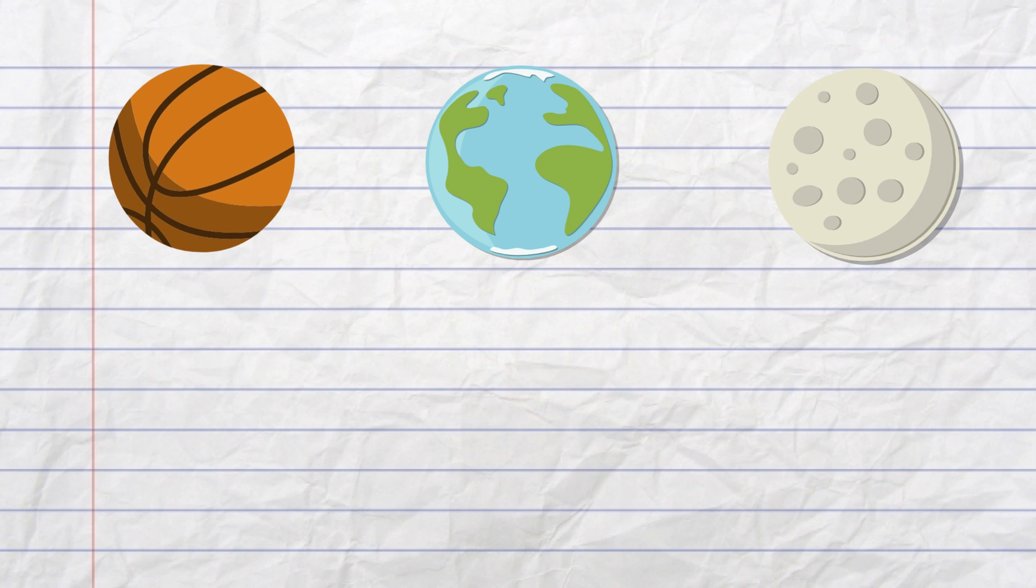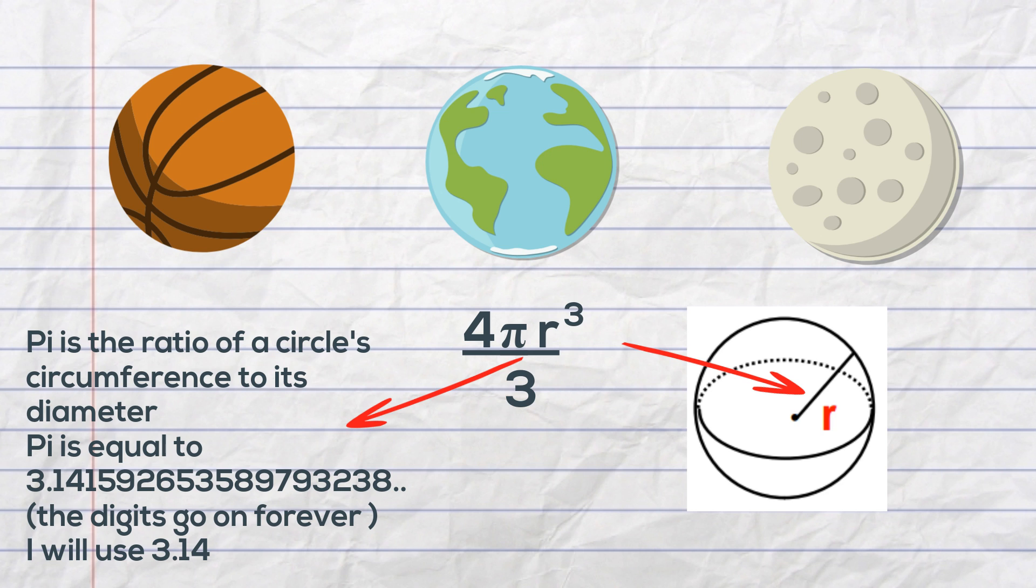The formula for calculating the volume of a sphere is four-thirds times pi times the radius of the sphere cubed. So let's work an example.